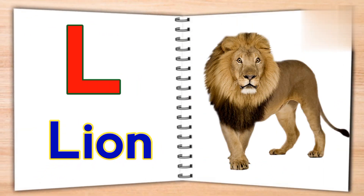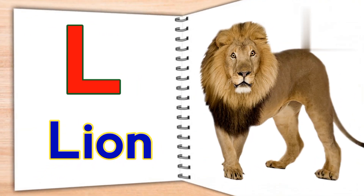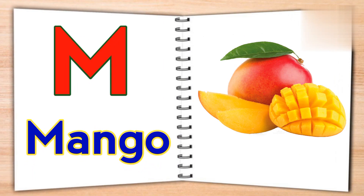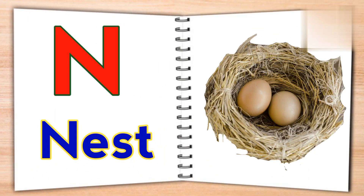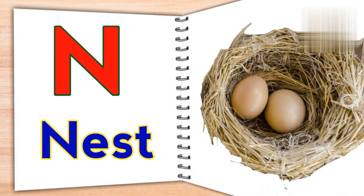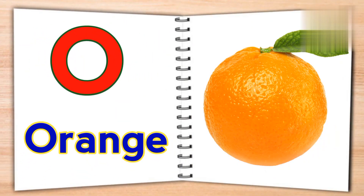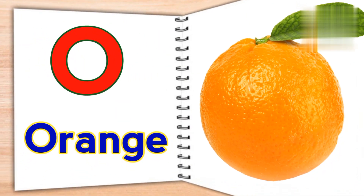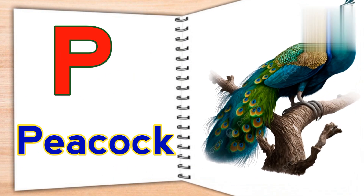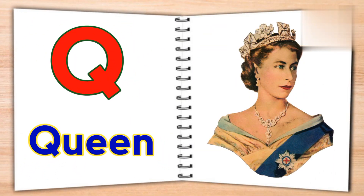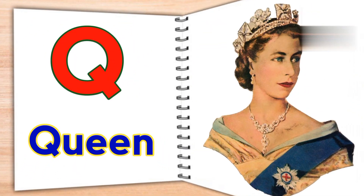K for kite, L for lion, M for mango, N for niche, O for orange, P for peacock, Q for queen.